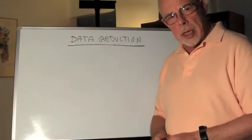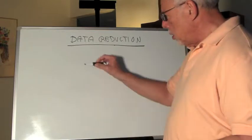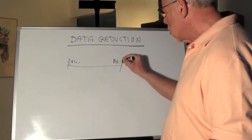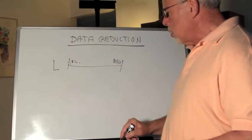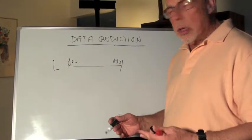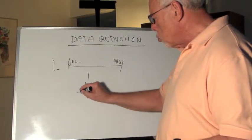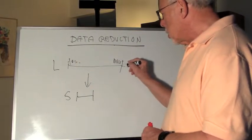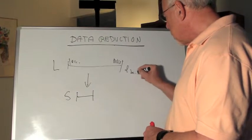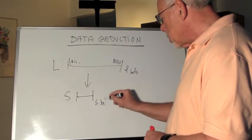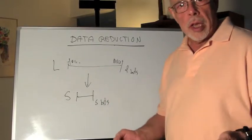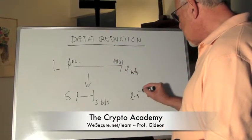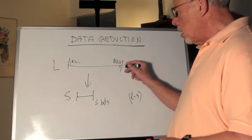Here is lossy data reduction. We take a string of bits 1, 0, 0, 0, 0, 0, 0, 1, 1, we call it the long. And what we try to do is reduce it to a short string. This string has L bits and this one has small s bits.